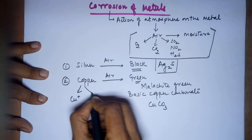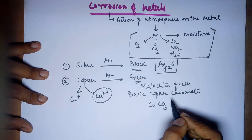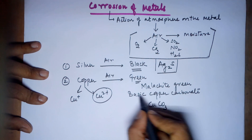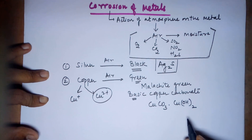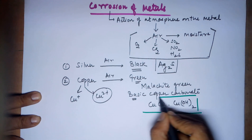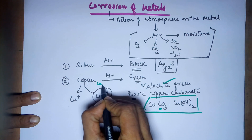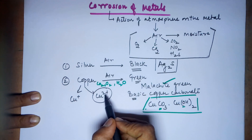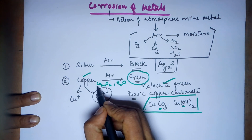Copper has two valencies — cuprous and cupric — but when we say copper, it is the plus-two valency which is the most common. So copper carbonate is CuCO₃. Basic copper carbonate also has some copper hydroxide in it. The components needed to form this green compound are carbon dioxide, oxygen, and moisture from the air.